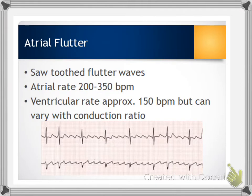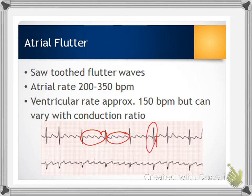If we have someone in atrial flutter, we might see these sawtooth flutter waves, as you can see here. That indicates the atrial rate, which with atrial flutter will be between 200 to 350, and our ventricular rate — represented by the QRS — will be approximately 150. Atrial flutter can be caused by coronary artery disease, hypertension, and valve disorders, and we are watching for signs and symptoms of decreased cardiac output.